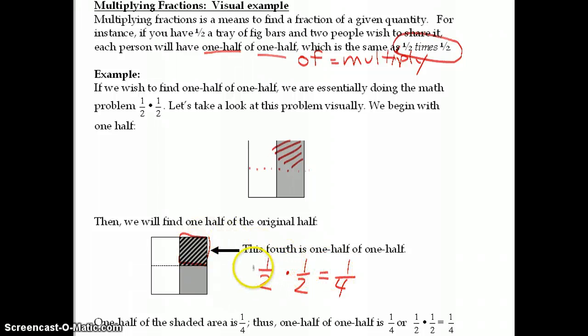We're finding what is one half of one half. This is different than multiplying by a whole number. When we multiply by a whole number, we get more than what we started with.